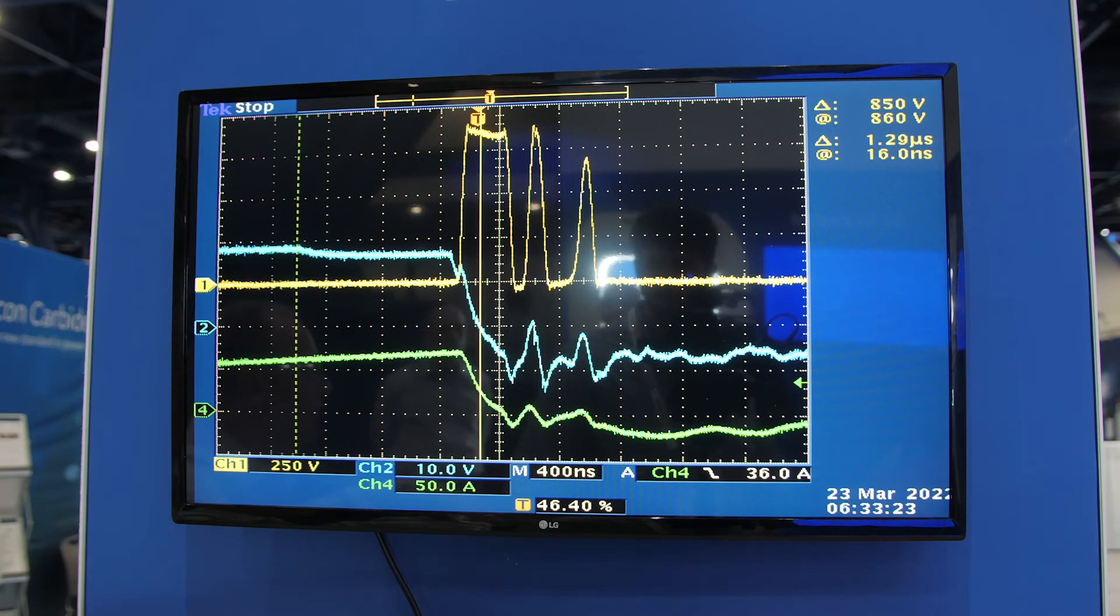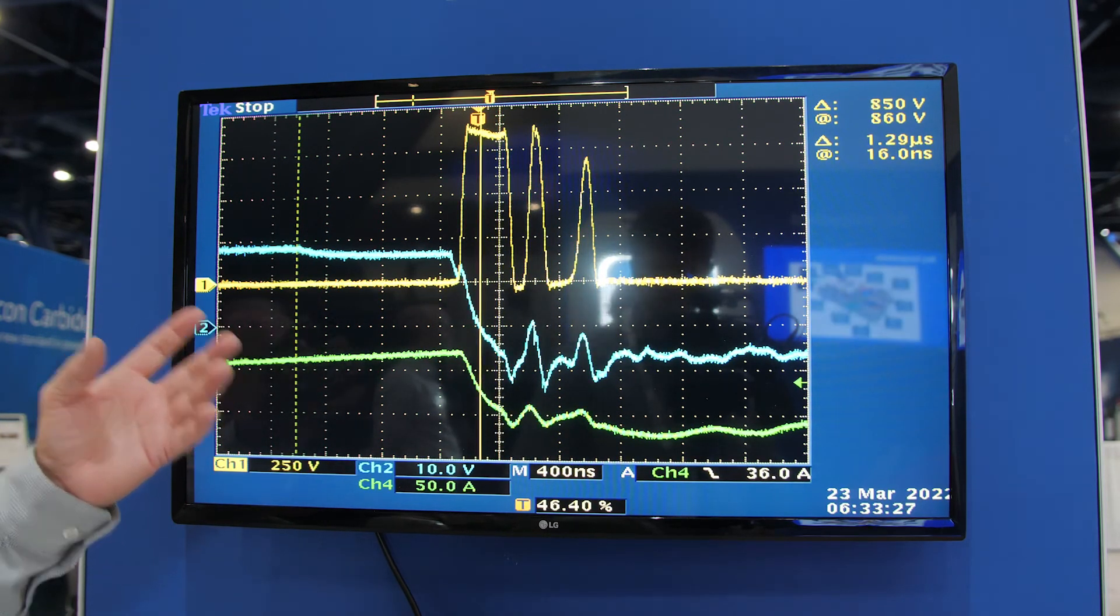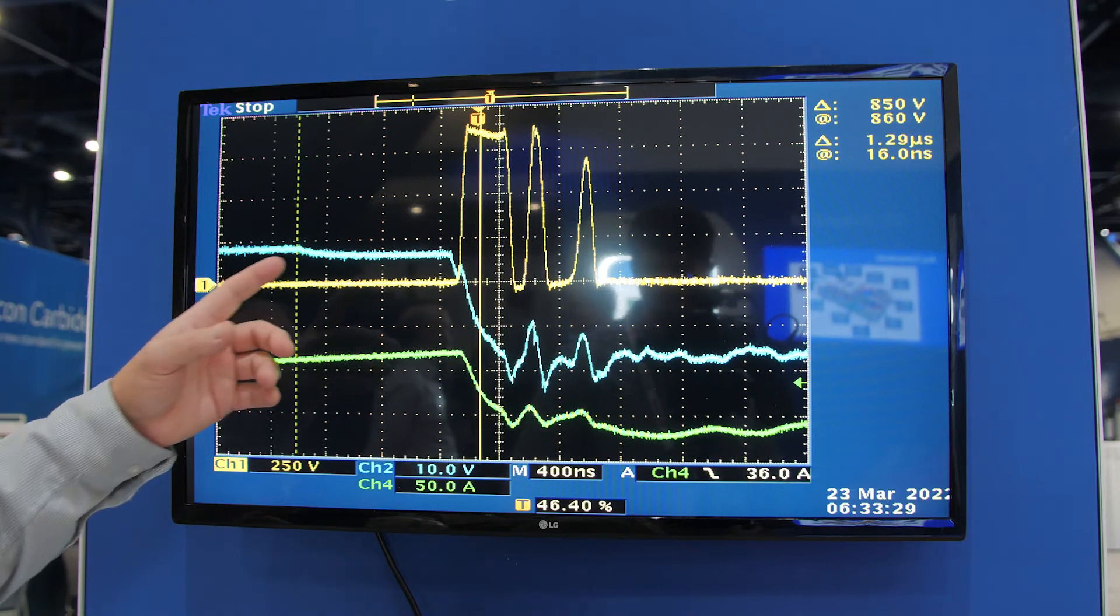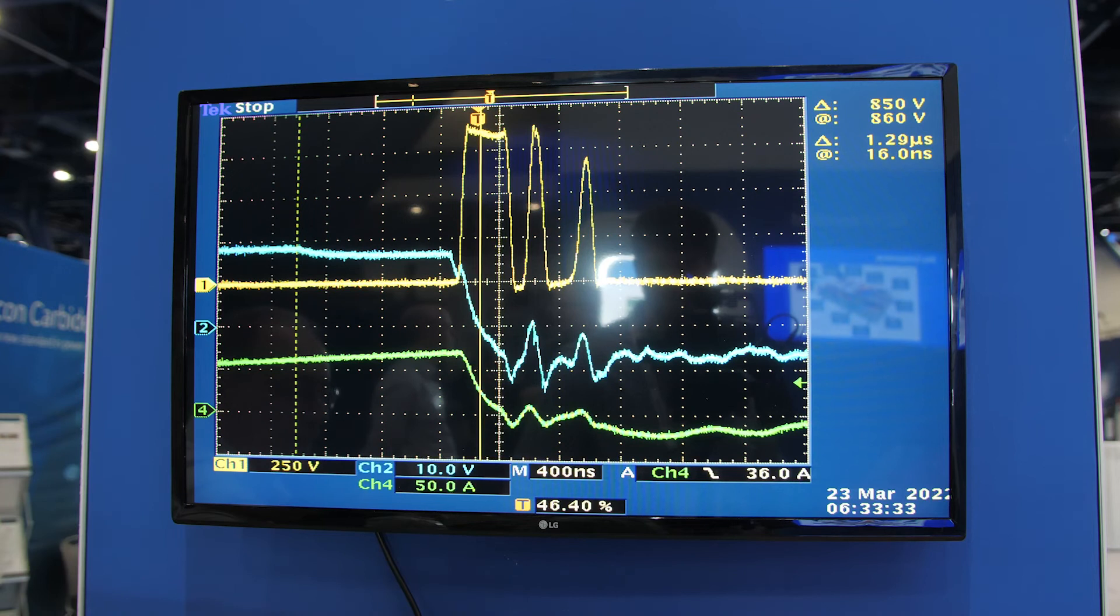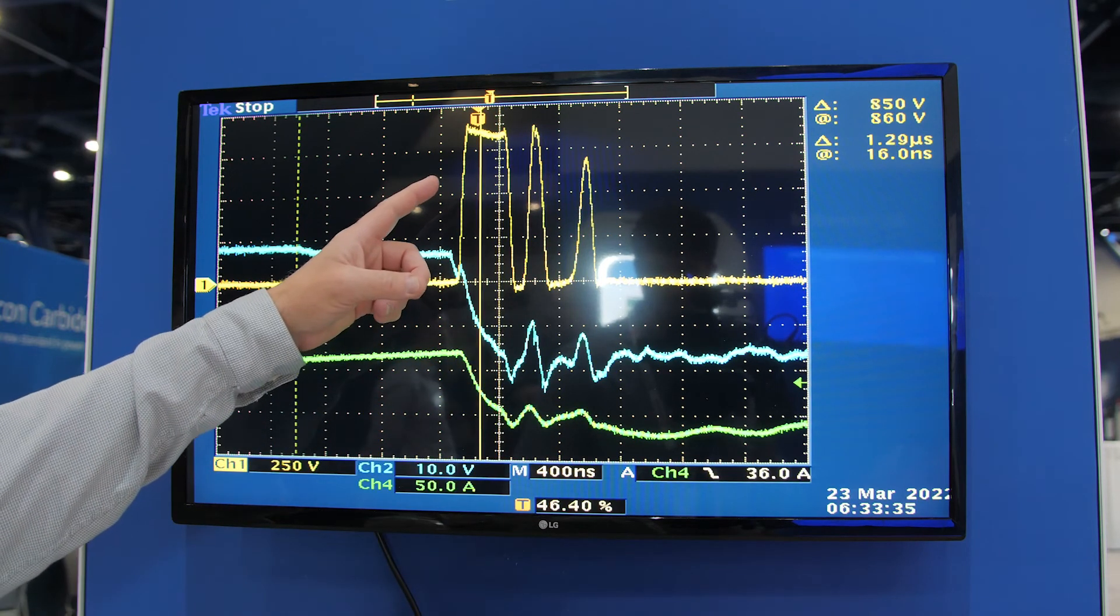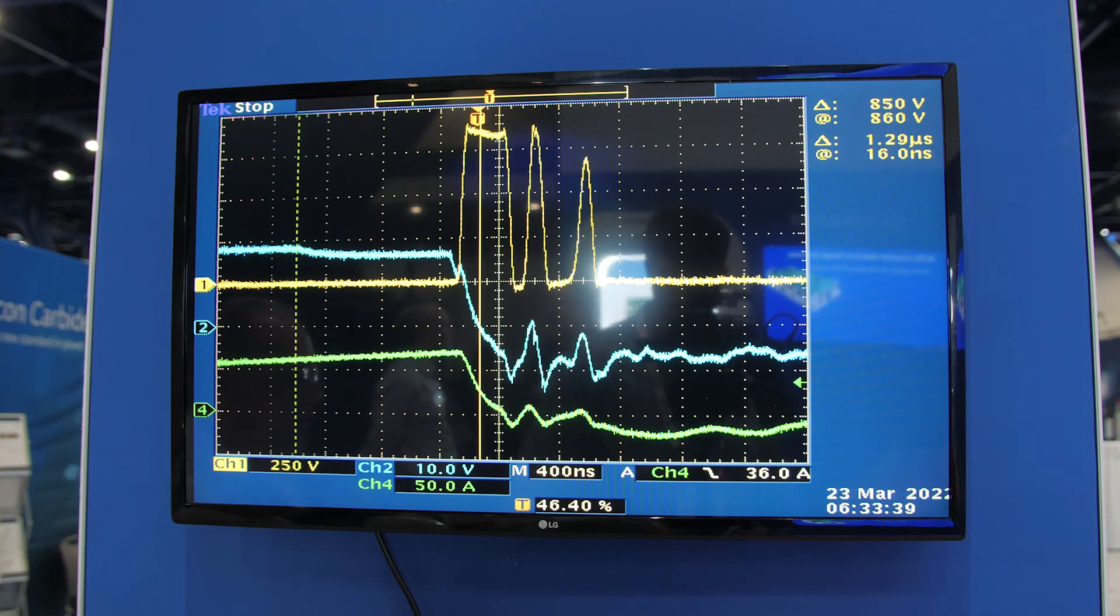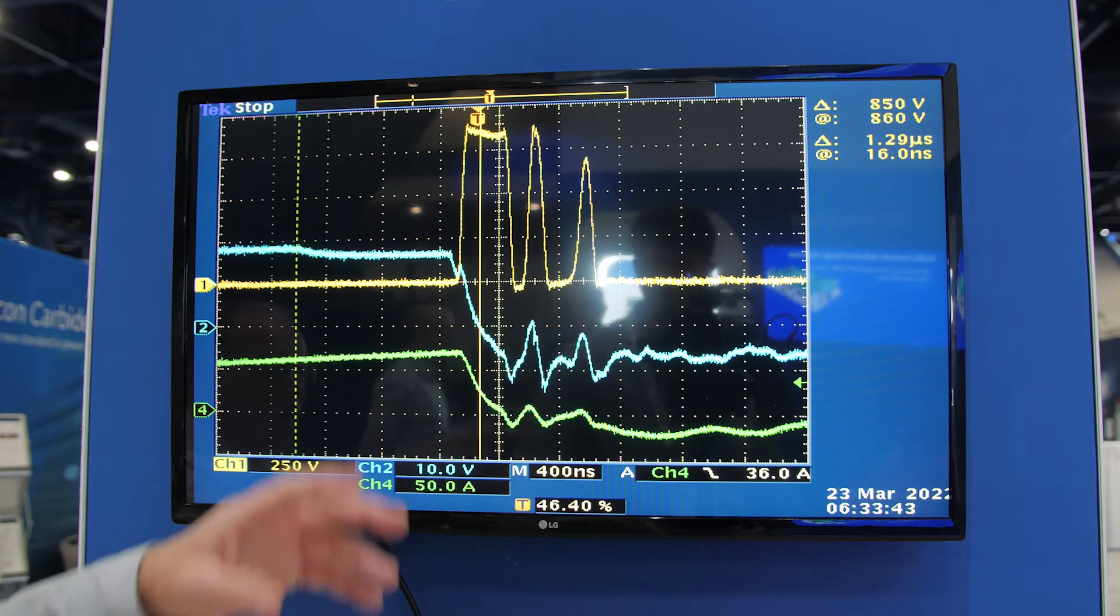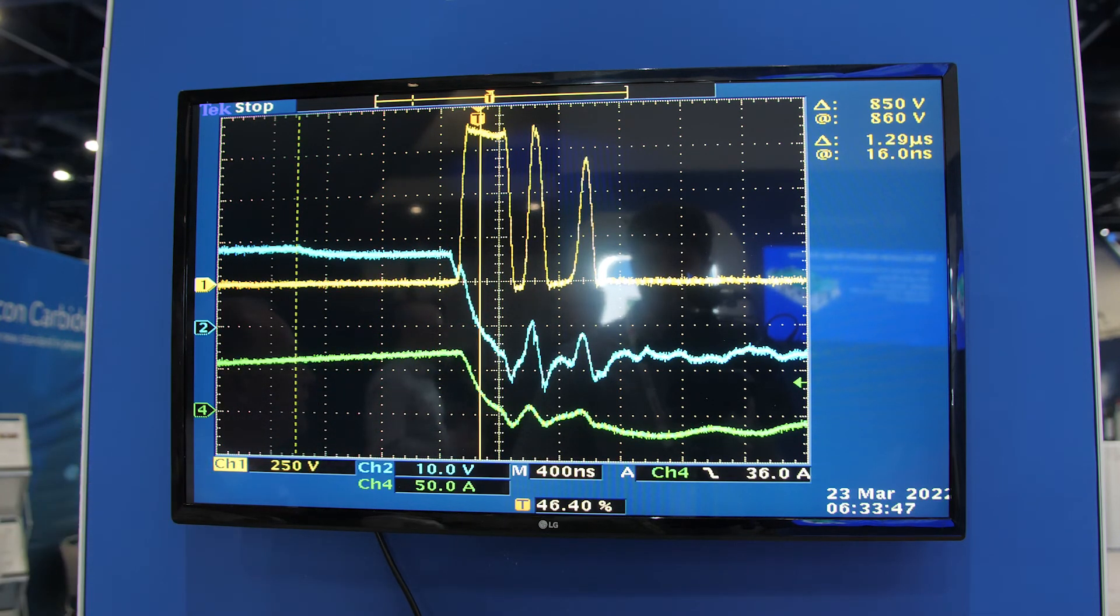Because the MOSFET is avalanche rated, it's designed to take that much energy and there's no degradation in its performance. After the energy comes out of the bus inductance, you can see that the voltage drops down. And then because it's a resonant circuit with the inductance and the capacitance of the MOSFET, you can see that it will ring a few times before all the energy settles out.